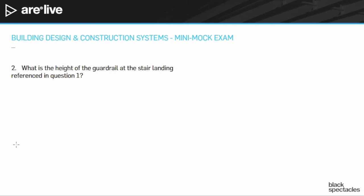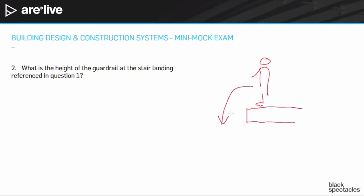Question 2: What is the height of the guardrail at the stair landing referenced in the previous question? When we talk about a guardrail, we're talking about preventing someone standing at the edge of a drop from falling off. Per the IBC — the International Building Code — that guardrail height is 42 inches above the finished floor, or 3'6". Some jurisdictions use 36 inches, but 36" is being phased out. IBC, which the exam is based on, always uses 42".